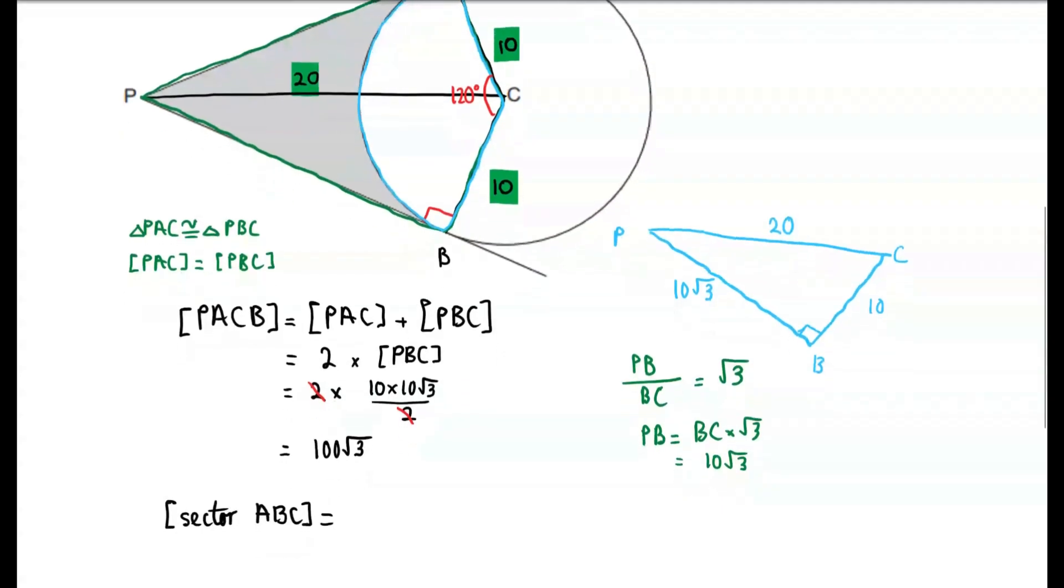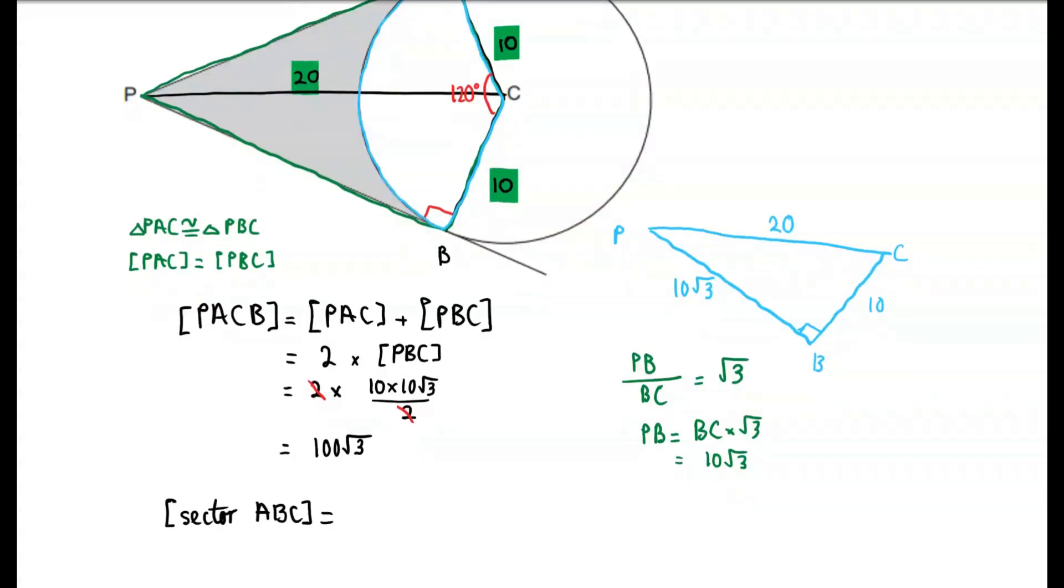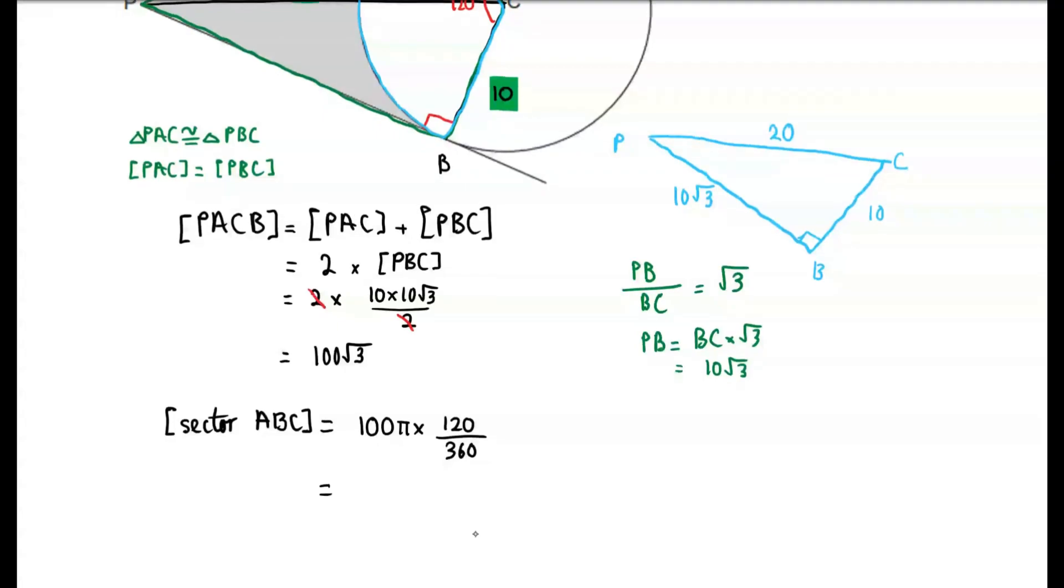And now we can use this to find the area of sector ABC of the circle. This is going to be, firstly, the area of the circle, which has radius 10, so therefore must have area 100 pi, multiplied by 120 over 360, which, simplified a little bit, is 100 pi times a third, or 100 over 3 pi.